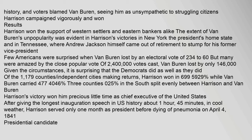Harrison won the support of Western settlers and Eastern bankers alike. The extent of Van Buren's unpopularity was evident in Harrison's victories in New York, the president's home state, and in Tennessee, where Andrew Jackson himself came out of retirement to stump for his former vice president. Few Americans were surprised when Van Buren lost by an electoral vote of 234 to 60, but many were amazed by the close popular vote: of 2,400,000 votes cast, Van Buren lost by only 146,000. Of the 1,179 counties and independent cities making returns, Harrison won 699 (59.29%) while Van Buren carried 477 (40.46%). Three counties (0.25%) in the South split evenly.